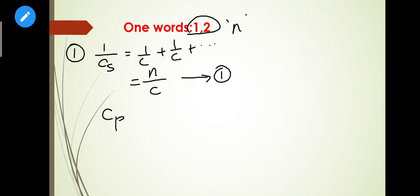First question: If n capacitors of equal capacitance are connected in series and then connected in parallel, find the ratio of their effective capacitance. For series connection: 1/C = 1/C₁ + 1/C₂... For parallel connection: C = C₁ + C₂ + C₃.